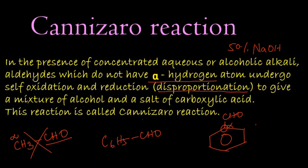The Cannizzaro reaction involves self oxidation and reduction — that is, disproportionation — to give a mixture of an alcohol and a salt of a carboxylic acid. The alcohol obtained is benzyl alcohol and the salt of carboxylic acid is sodium benzoate. This reaction is known as the Cannizzaro reaction.